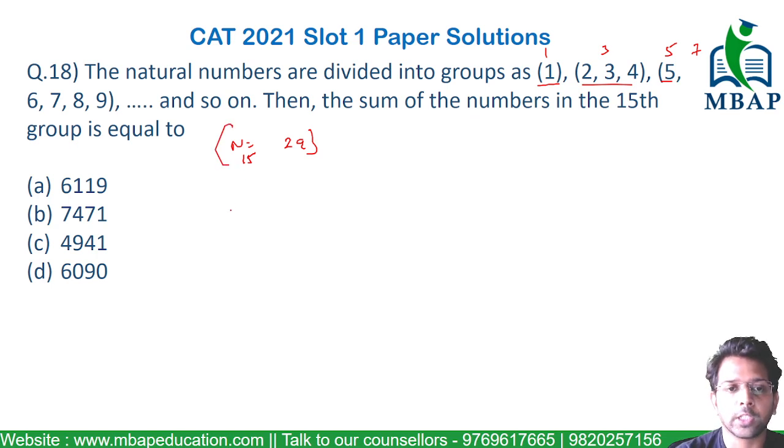Now the question is to find the terms in the group. The last term in the first group is 1, the last term in the second group is 4, the last term in the third group is 9. If you look at this pattern: 1, 4, 9, it's basically the square of that particular number, which is 1 squared, 2 squared, 3 squared, determining the group number.